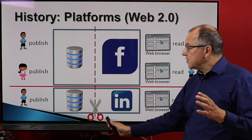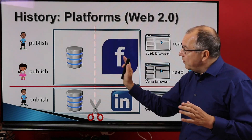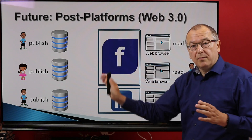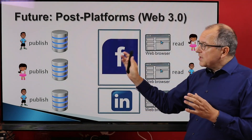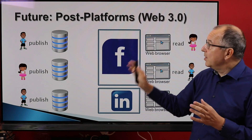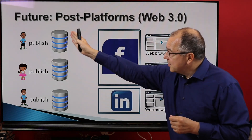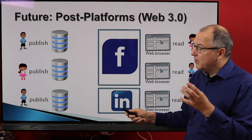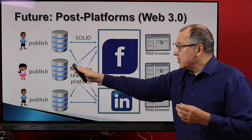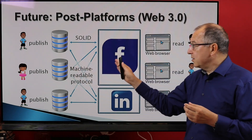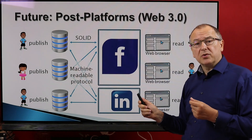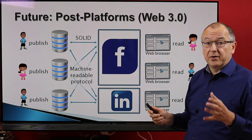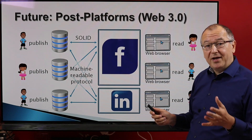What we suggest is to cut the data away from platforms and move it back to people — back to those who publish it. In a way it's a step back to Web 1, but we call it Web 3. It has three layers: a solid server on the left — not a web server, we call it a solid server — and there will be a solid protocol between the server and platforms.